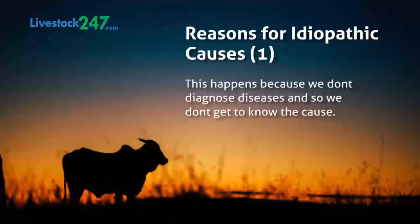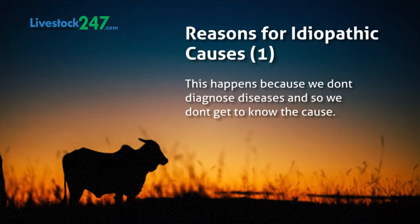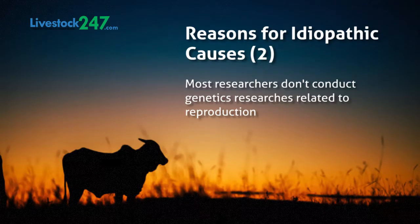The reason why such abortions are not known is because we don't take a diagnosis when we have problems on our farm. We have diseases and infections going from one animal to another, but we don't diagnose. And because there is no diagnosis, we don't even know the reason why such a thing is happening. Another reason is that most of the research conducted on the genetic part of reproductive problems is very, very limited — very few researchers go into genetics associated with reproductive problems.